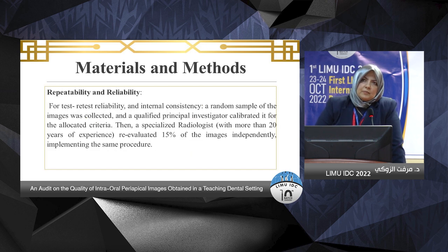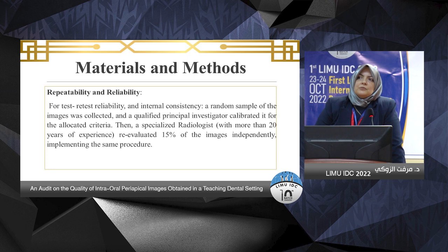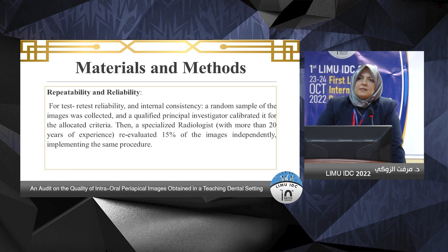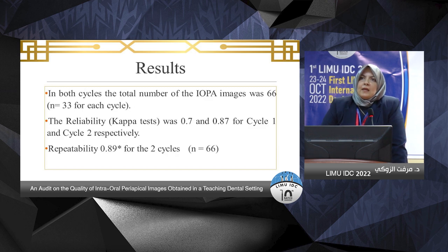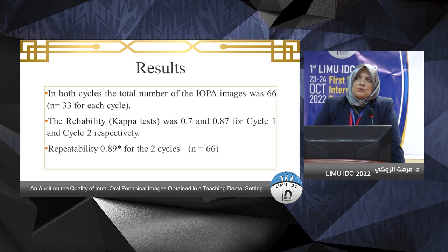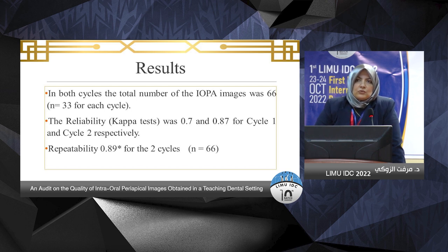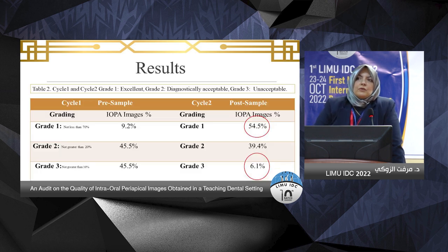For test-retest reliability and internal consistency, a random sample of approximately 15% of the sample size was collected. Moving to results: both cycles had 33 images each, totaling 66. Reliability was 0.7 and 0.87 for cycle one and cycle two respectively, and repeatability was 0.89 for both cycles.